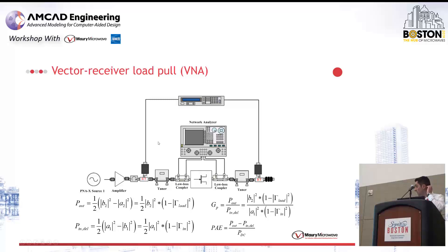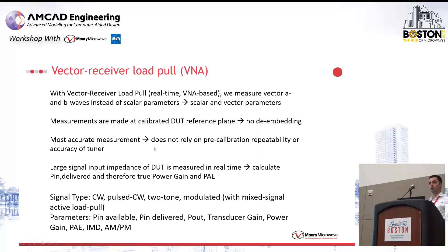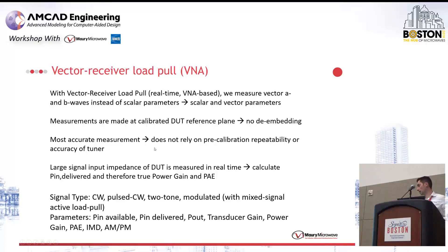To summarize: vector receiver load pull is done in real-time, so the quantities are measured real-time on the device under test. There's no pre-characterization of the tuner required — it's VNA-based. This is probably the most accurate measurement because it does not rely on pre-calibration and does not rely on the repeatability of the tuner. The large signal input impedance is measured in real-time. Probably the only drawback, in the classical sense of this type of system, is that you cannot easily do modulated measurements, because the VNA normally measures CW and pulse CW signals. You can do two-tone with conventional systems.